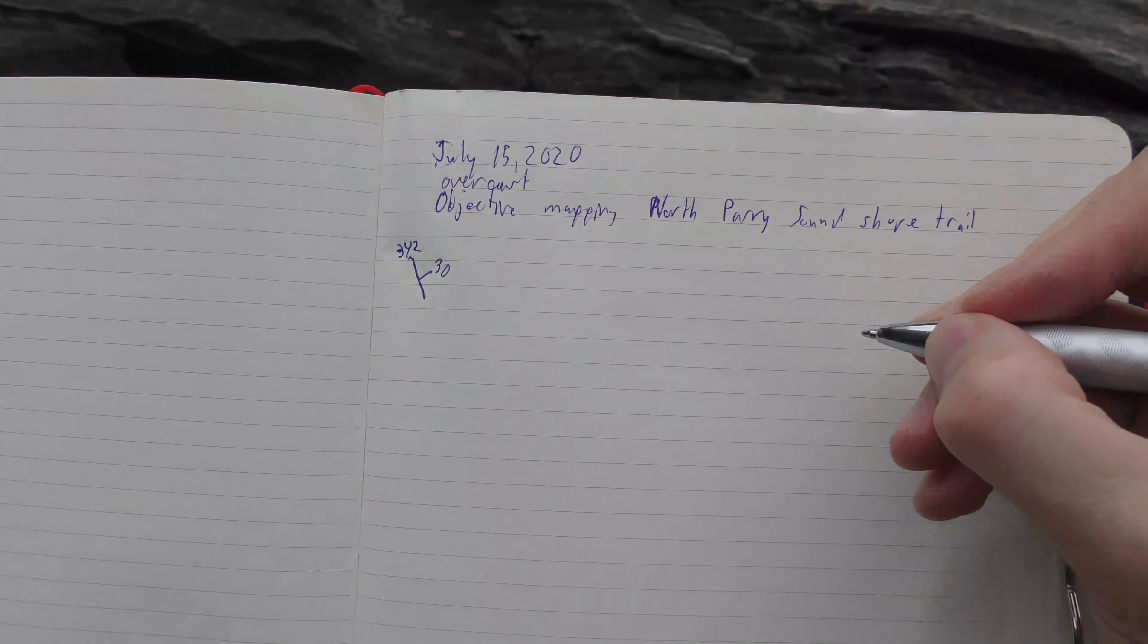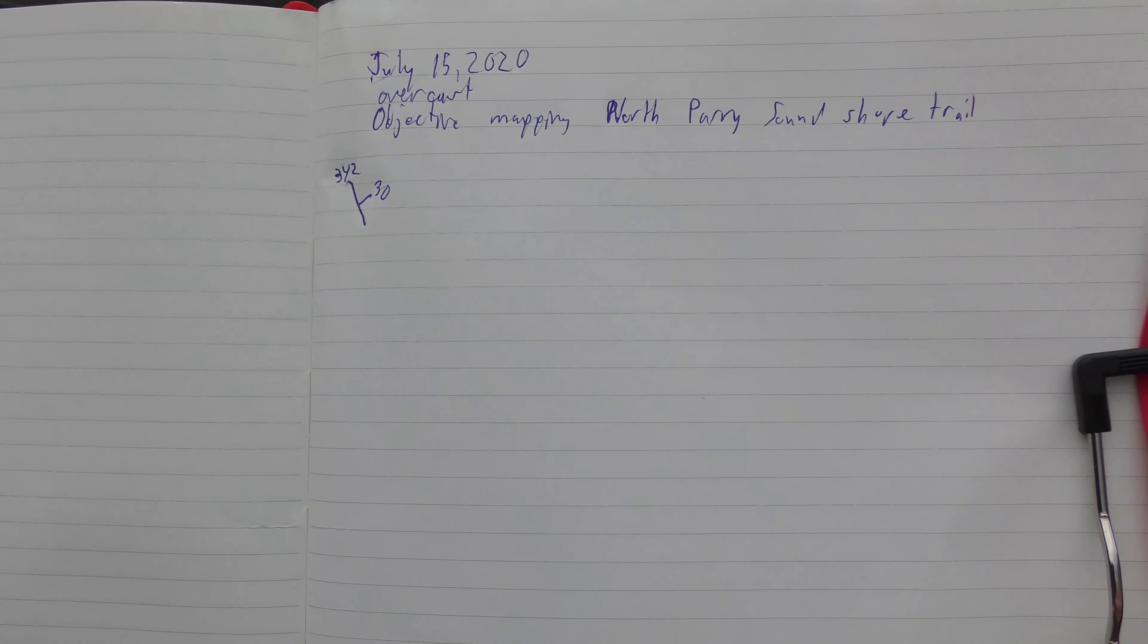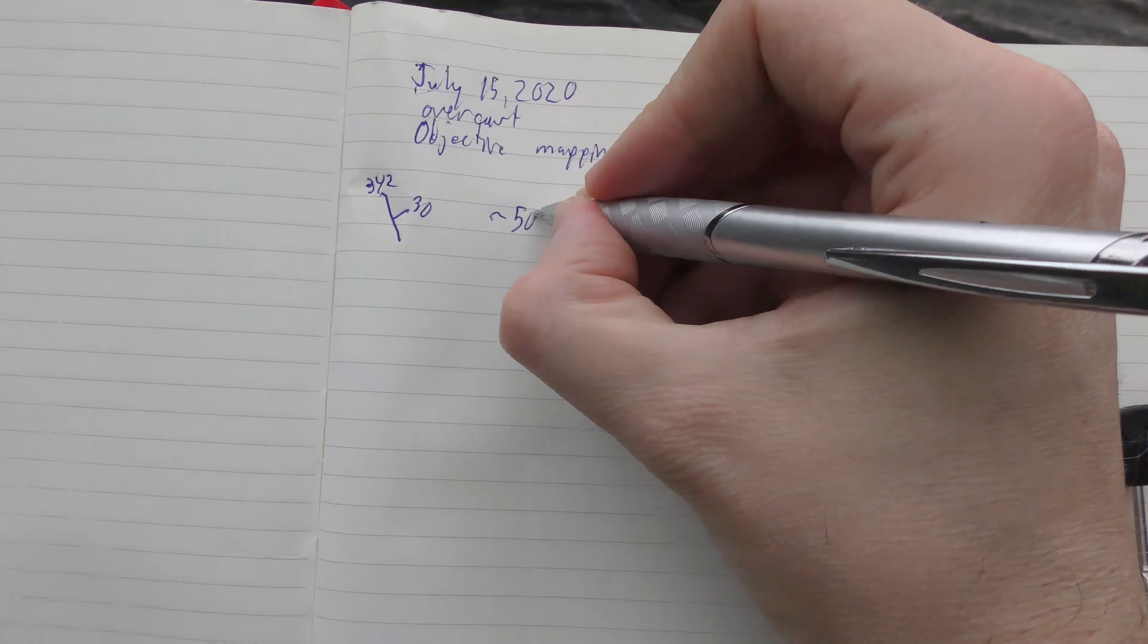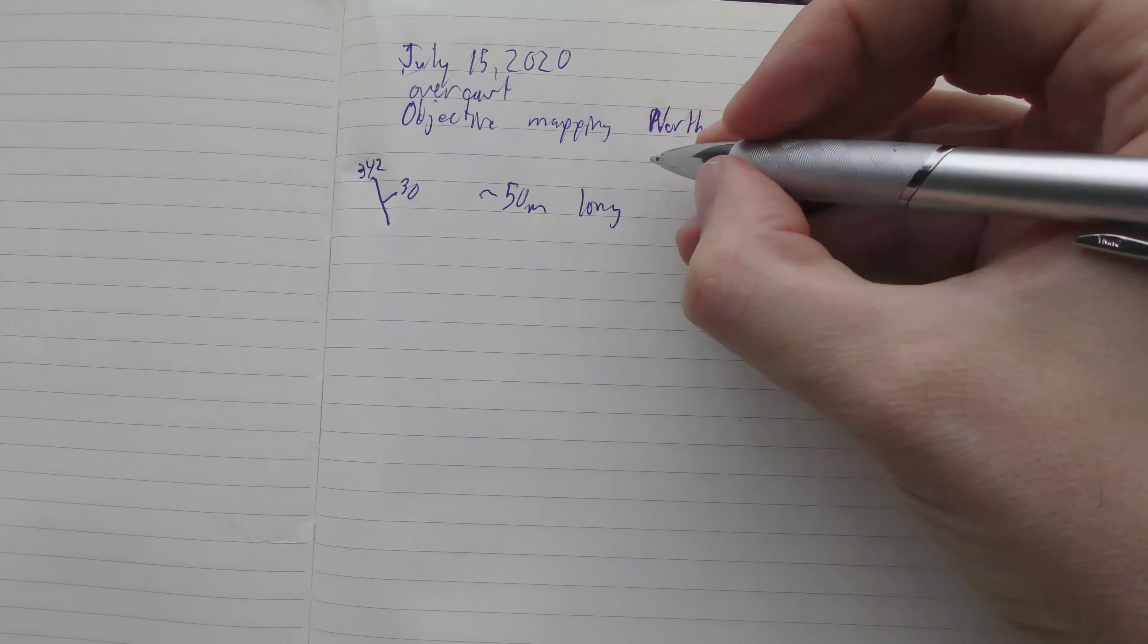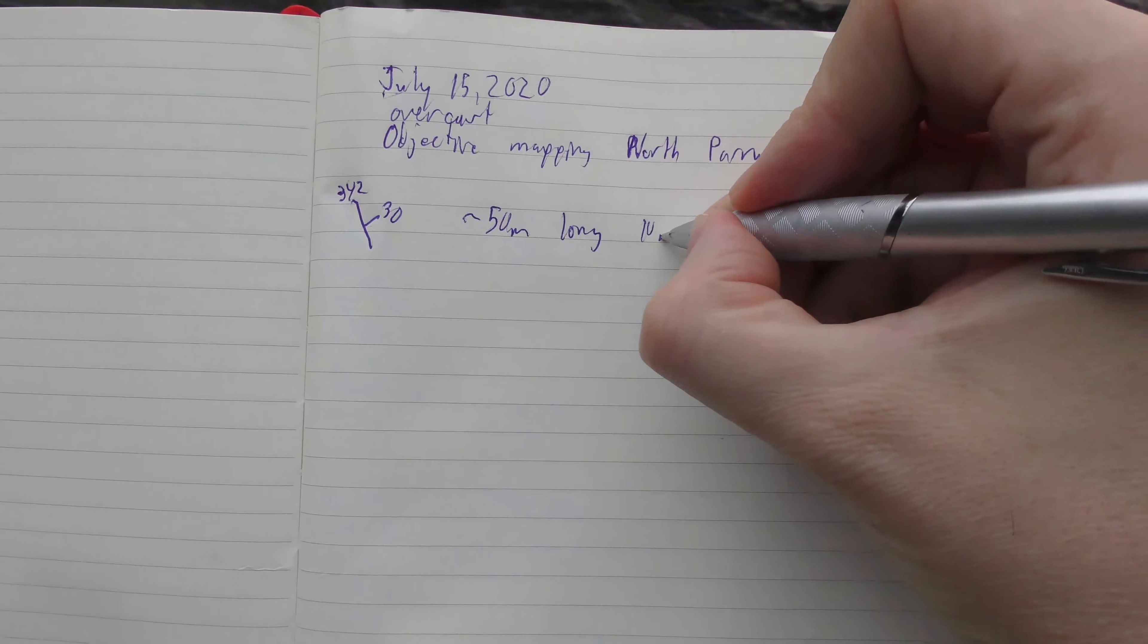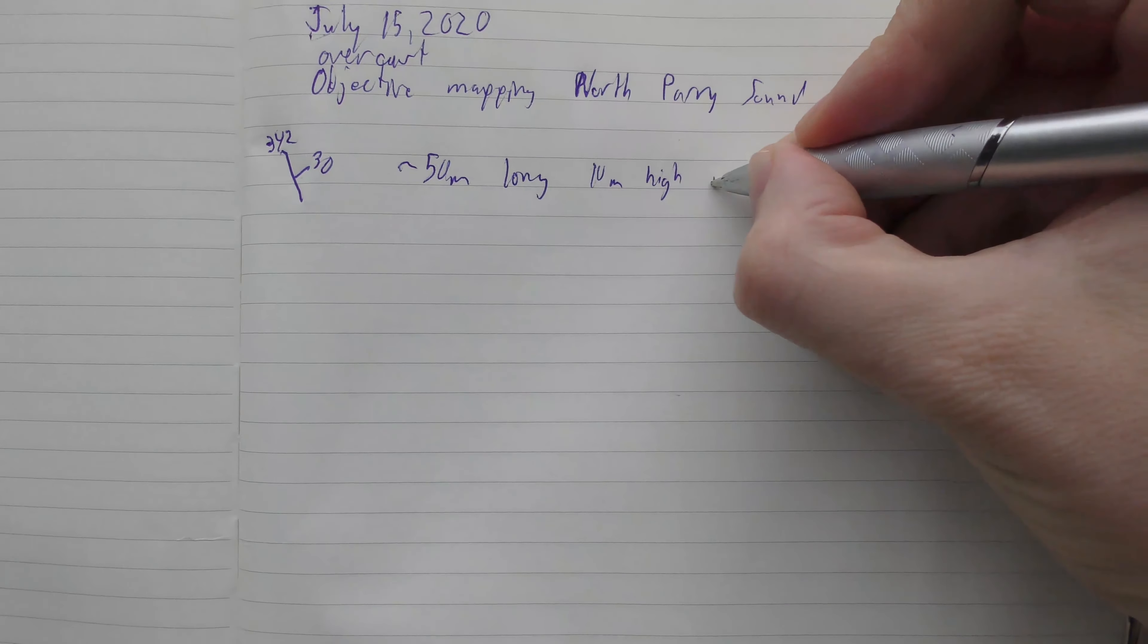And now we'll describe the outcrop. So what it is is an approximately 50 meter long, 10 meter high road cut.